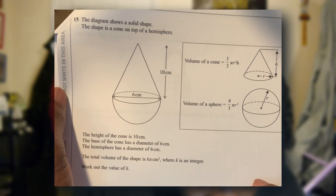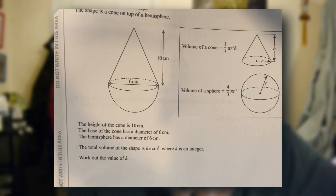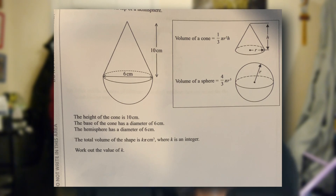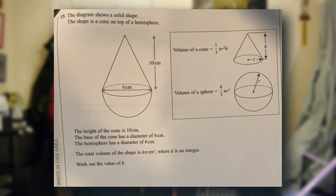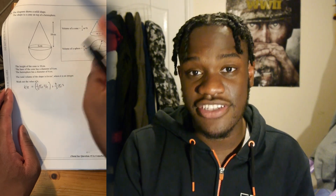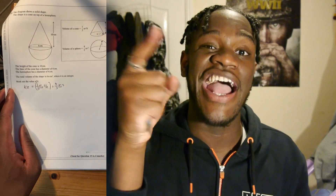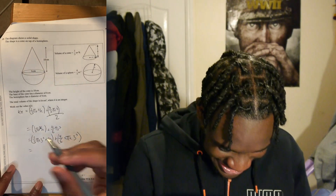There's a diagram for a solid shape — the shape of a cone on top of a hemisphere. What's a hemisphere? The total volume of the shape is K times pi CM cubed. I want the value of K. I know that's the volume of a sphere because I searched it up, but it's half of one. Wait, wait — we're getting somewhere, we're actually getting somewhere, guys. We've got K!